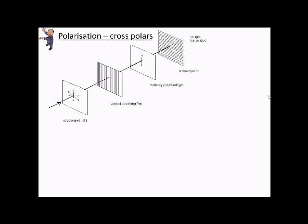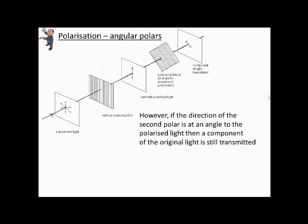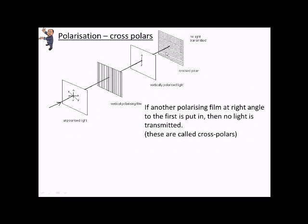Now, if we've got a cross polar in addition to our vertical polars, that's just one that's perpendicular to it, so 90 degrees, we'll notice that no light can actually pass through.